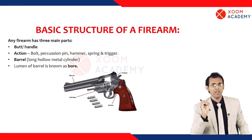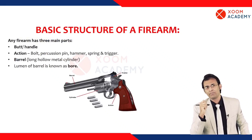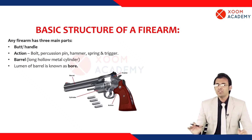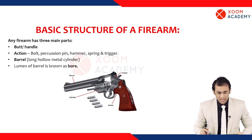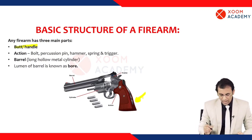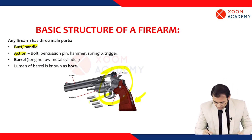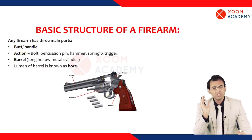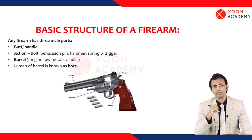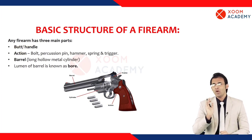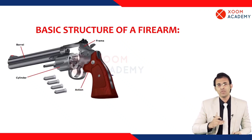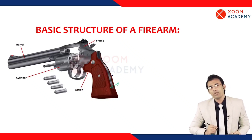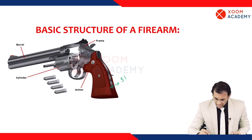Now let's start with the basic anatomy of a firearm — whether it is a revolver or a shotgun, the basic anatomy and main parts will be the same. See this picture: this part is the supporting system, also called the butt, handle, or stock.